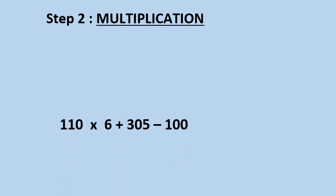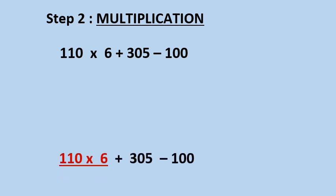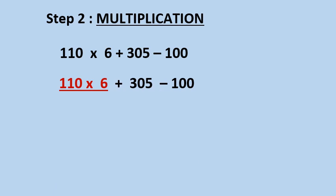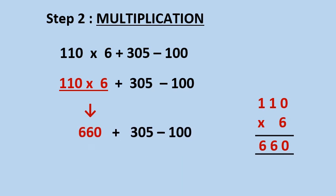Step number 2 is multiplication. Now we multiply these two numbers, 110 and 6. When we multiply 110 and 6, the answer is 660. We write 660 in place of 110 multiply by 6.